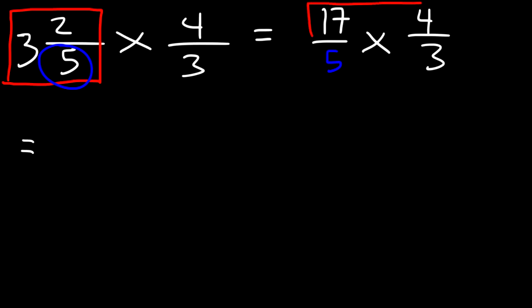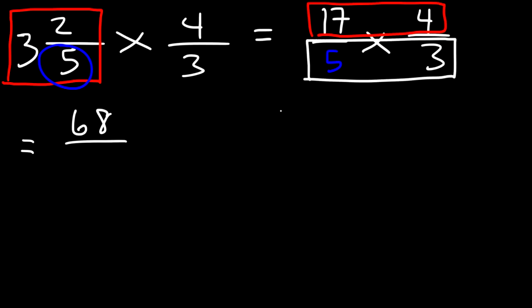So I need to multiply across. 17 times 4—well, 10 times 4 is 40, 7 times 4 is 28, 40 plus 28—that's going to give me 68. And then I need to multiply 5 times 3 which will give me 15.